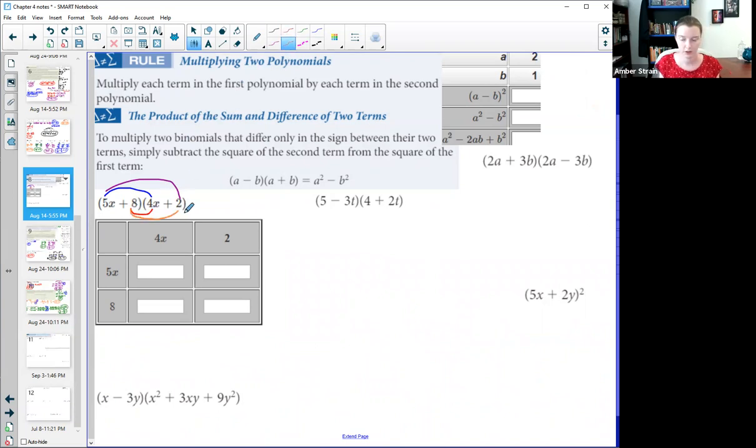So we end up with four separate terms, four separate multiplications. Just to visually, you don't necessarily work them out this way, but just to visualize the 5x to the 4x gave us 20. And then the x times x made x squared. The 5x times the 2 would be 5 times 2 is 10, and that x of course would still be there. The 8 times the 4x would be 8 times 4 is 32.